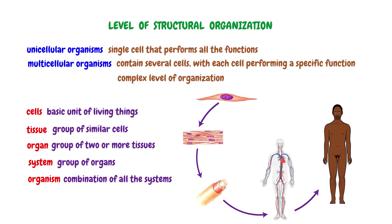To recap, multicellular organisms are organisms composed of many cells. These organisms have a complex level of organization which includes: cells as the basic unit; tissues as groups of similar cells performing a common function; organs as groups of two or more tissues working together to perform a specific function; systems as groups of organs performing a particular function; and finally, the organism, which is the combination of all the systems.